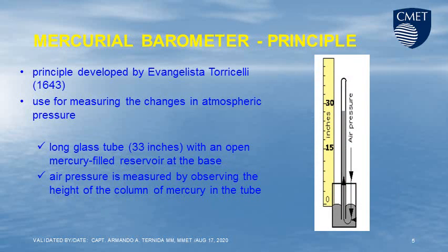Mercury barometer principle. Principle developed by Evangelista Torricelli in 1643, used for measuring changes in atmospheric pressure. It uses a long glass tube, 33 inches, with an open mercury-filled reservoir at the base. Air pressure is measured by observing the height of the column of mercury in the tube.